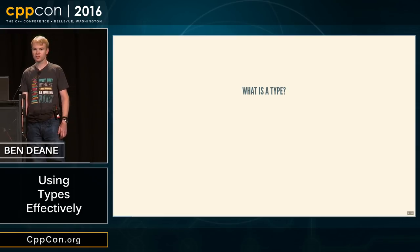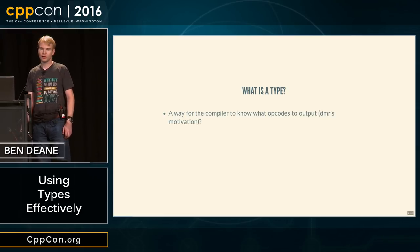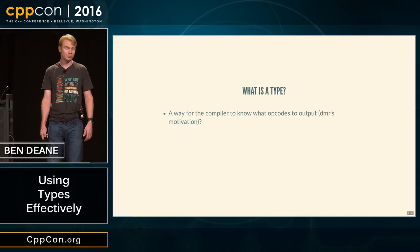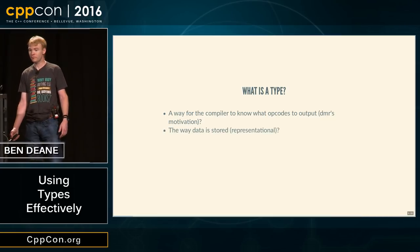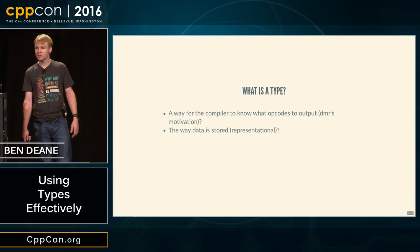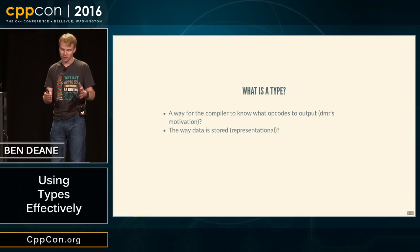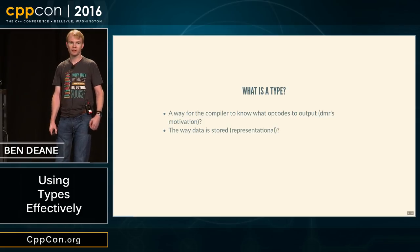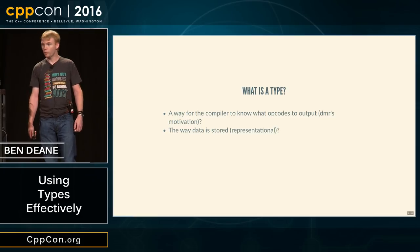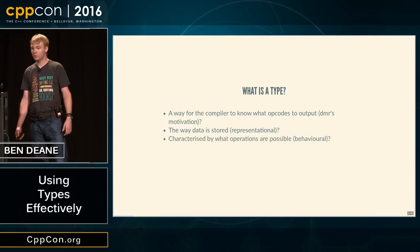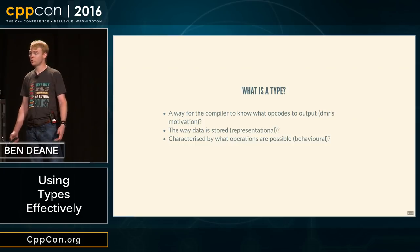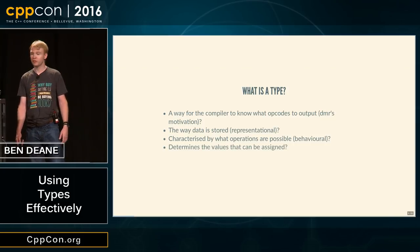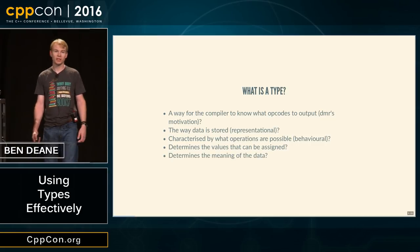When asked this question, I get lots of different answers. One of the original motivations for putting types in C that Dennis Ritchie had was that new hardware was supporting floating point, and his compiler needed a way to figure out the difference between integers and floats to know what opcode to output. Many C++ programmers, concerned with performance, think about types in a very representational manner — the way data is stored in memory. Another view is the object-oriented view: characterizing what operations are possible, determining the values we can assign, or determining the semantic meaning of data.